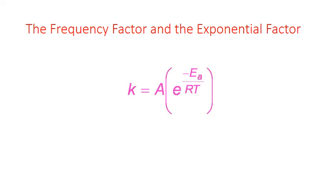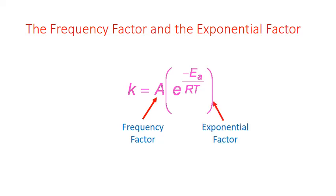In the Arrhenius equation, the frequency factor A indicates the number of molecules that approach the activation barrier. The exponential factor — the entire expression in parentheses — represents the fraction of those molecules that actually have enough energy to make it over the activation barrier when they approach.